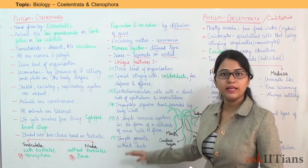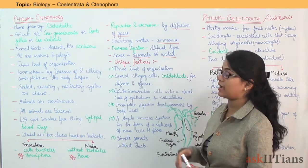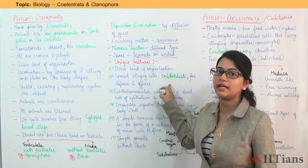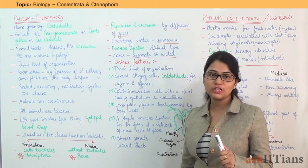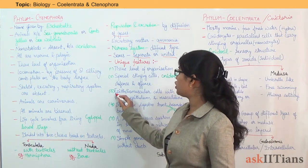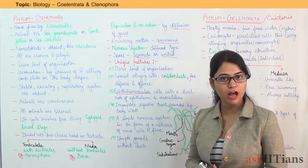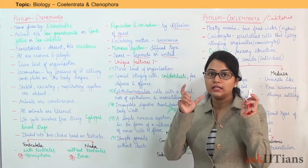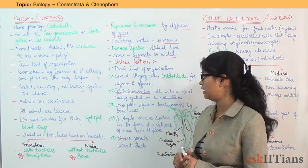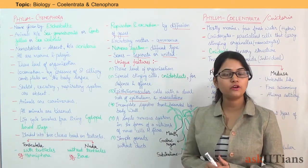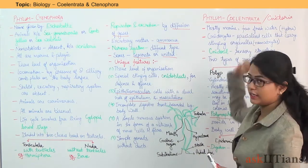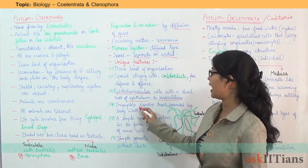Now looking at the unique features of Coelentrata: first, they have a tissue level of organization. Second, special stinging cells called nematoblasts are present, which serve both a defense and offense mechanism. Next, epitheliomuscular cells are found — these cells have a dual role, combining epithelial and muscular functions, and are found in Coelentrata.